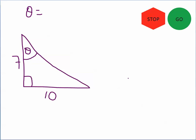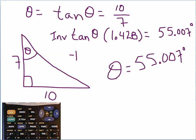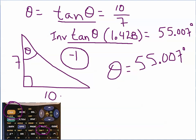Okay, see how you do on this one — search for theta. Press on the stop sign. All right, let's see how you did. We don't know theta, but we do know the lengths of the two legs of the right triangle, so we must be dealing with the tangent function. We use the second key for the inverse tangent. Note that the negative one exponent notation means inverse function — do it backwards, not multiplication. The inverse tangent of 10/7, which is 1.428 correct to three decimal places, equals 55.007 degrees. So theta is 55.007 degrees.